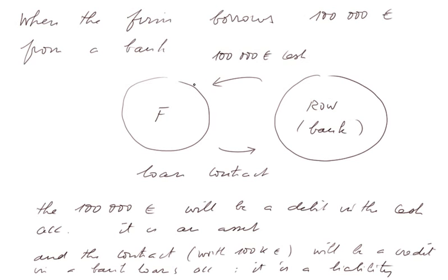100,000 euros of cash leave the bank and enter the firm, and a loan contract — which is one sort of IOU — leaves the firm and goes into the bank. The 100,000 euros will be a debit in the cash account, and the cash account is an asset of the firm — it is things that the firm owns. The contract worth 100,000 euros will be a credit in a bank loans account of F's accounting system, and that's called a liability of F.